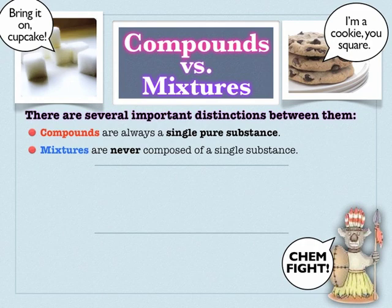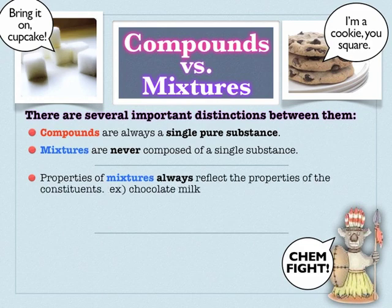So if you have a chocolate chip cookie, that's obviously going to be more than one substance. Remember the ingredient label analogy: if there's more than one ingredient on a label, then it's not a compound — it's a bunch of compounds, or a bunch of compounds and elements.